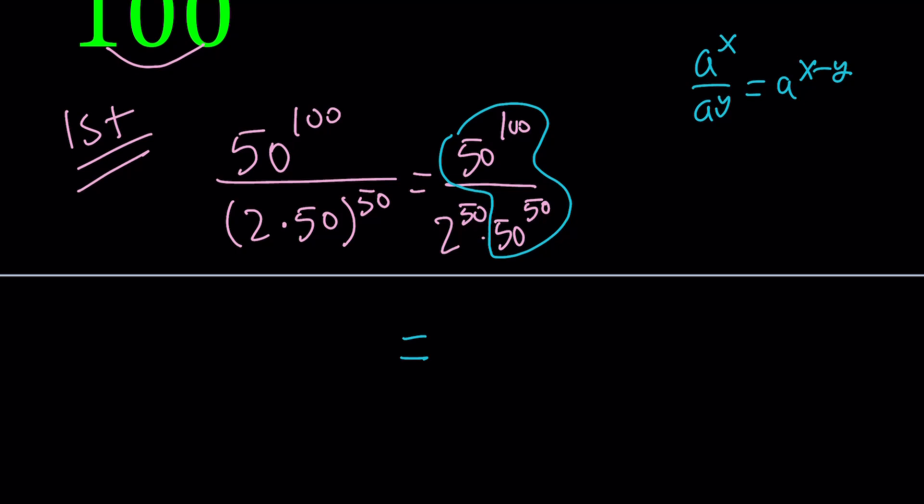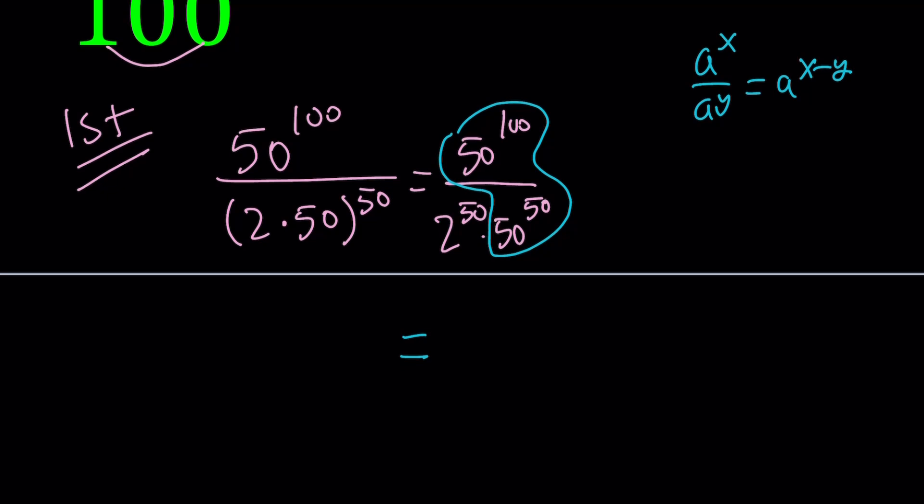So 50 to the power 100 divided by 50 to the power 50 is going to be 50 to the power 100 minus 50, which is 50 to the power 50. And 2 to the power 50 is just going to stay in the denominator. Now, we did get another situation.